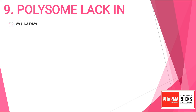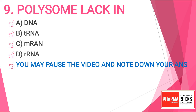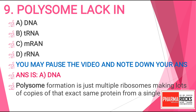Question number 9. Polysomes lack: Option A. DNA. You may pause the video and note down your answer. The correct answer for this question is Option A. DNA. Polysome formation involves multiple ribosomes making many copies of the same protein from a single mRNA. Poly means many, so multiple ribosomes together are known as polysomes.